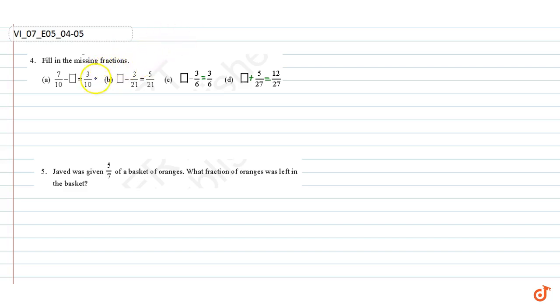Part A: missing value equal to 7 by 10 minus 3 by 10 equal to 7 minus 3 divided by 10 equal to 4 by 10 equal to 2 by 5. So here it is 2 by 5.